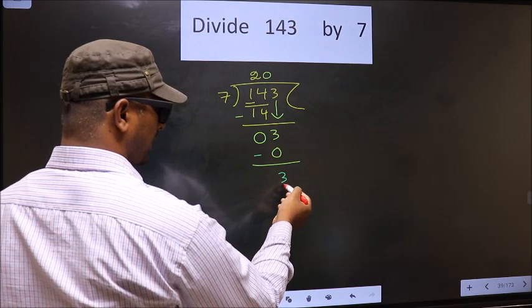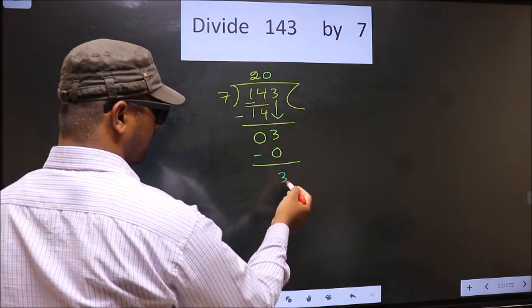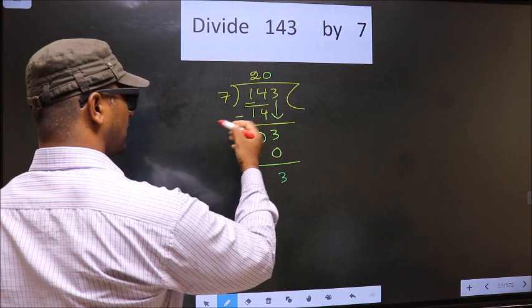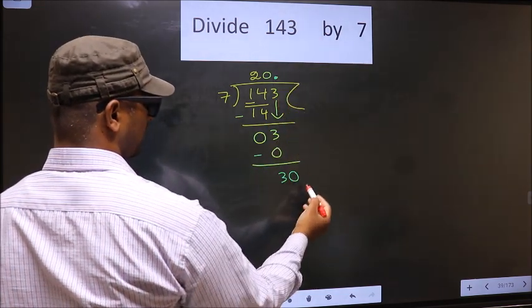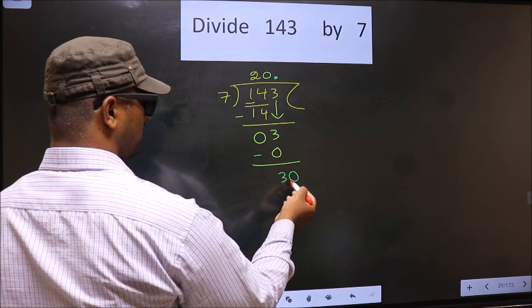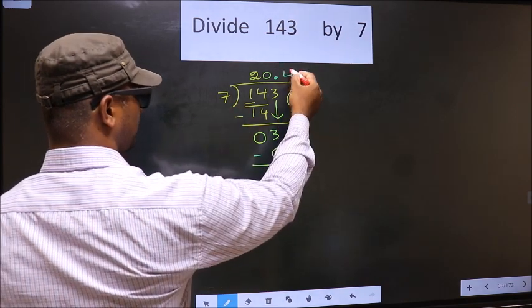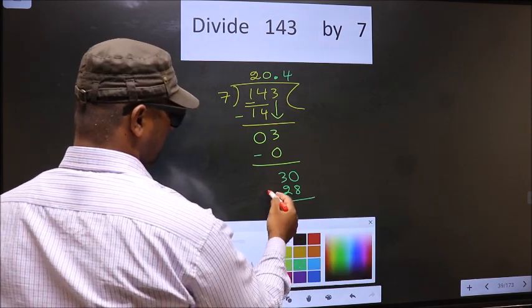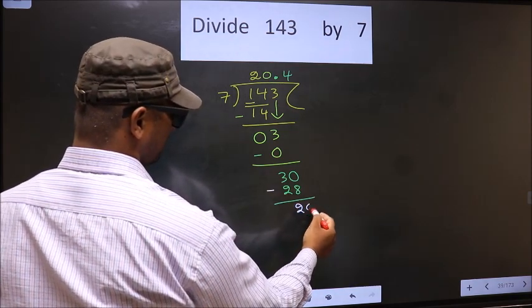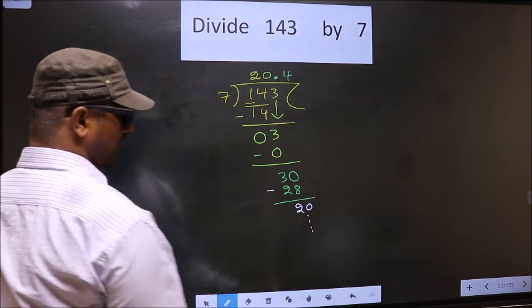Now we did not bring any number down here. And 3 is smaller than 7. So now we can put a dot and take 0 here. A number close to 13. 7 table is 7, 4, 28. Now you subtract. You get 2, 0. Continue the division. I am not doing that.